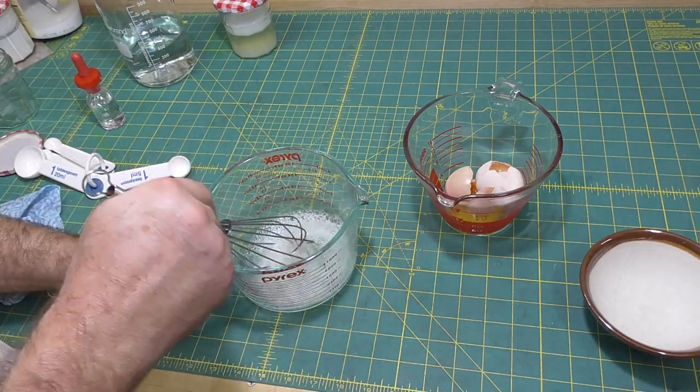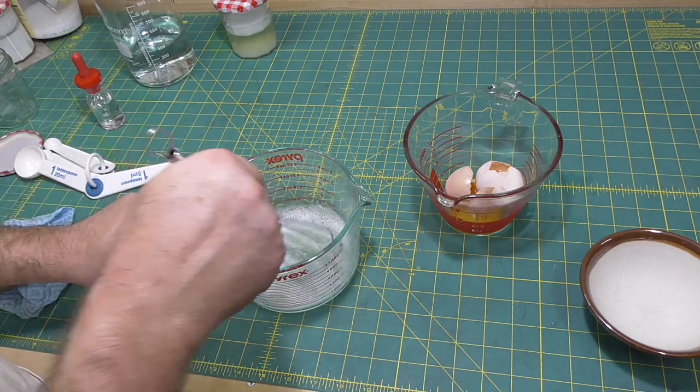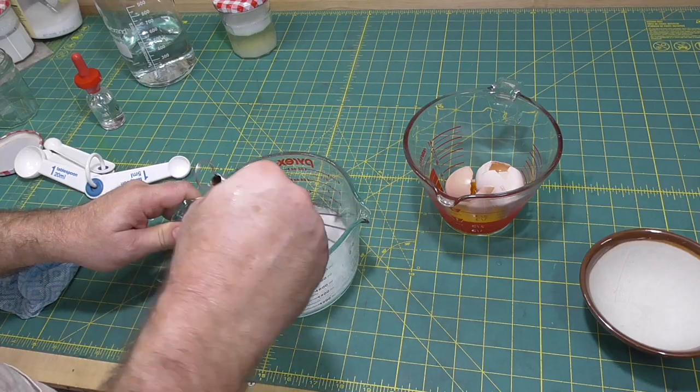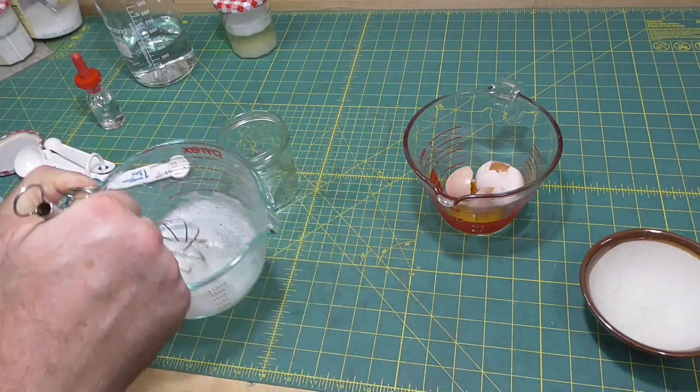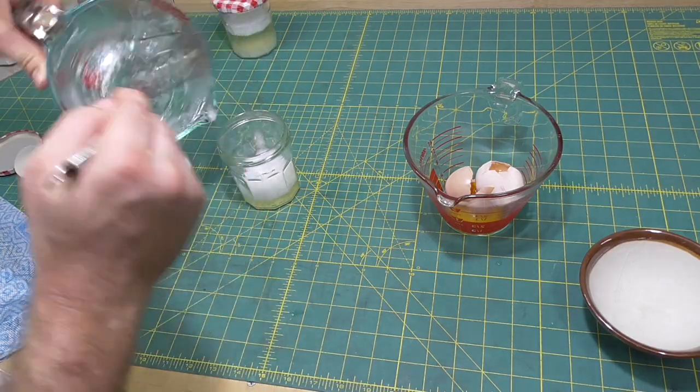Either way, the instructions for making egg glare vary quite dramatically as well. So I decided to do two versions. One version is one part egg white to four parts water, and in the second version, it's straight egg white and one teaspoon of vinegar.